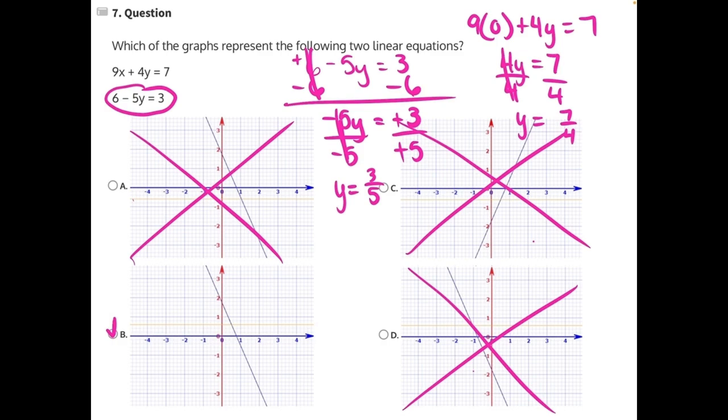If we would have done the same thing for our x-intercept, 9x plus 4 times 0 equals 7. 4 times 0 is just 0, so we'd have 9x equals 7.